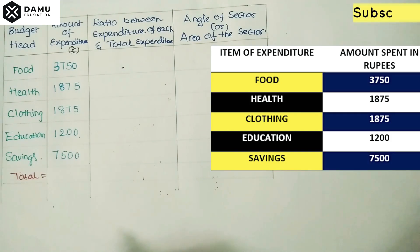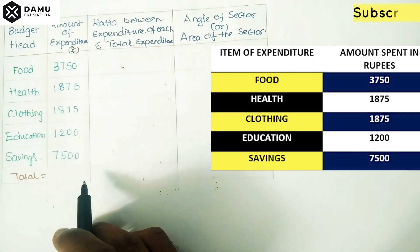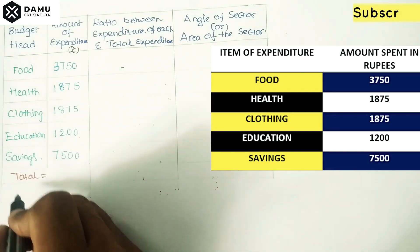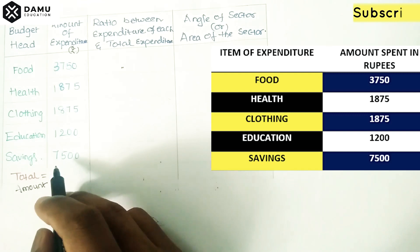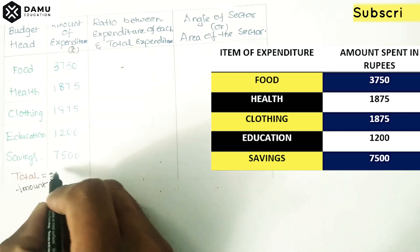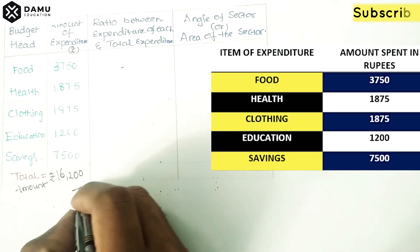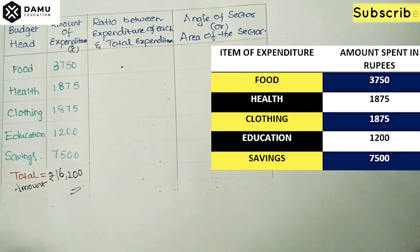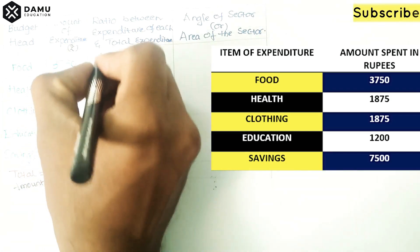Education is 1,200 rupees and savings is 7,500 rupees. We need to find the ratio between the expenditure of each item and the total expenditure. First, we calculate the total: adding all these values gives us 16,200 rupees.